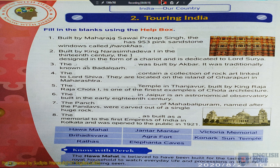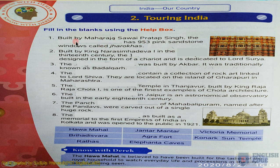It is the second chapter and the name is Touring India. The question is fill in the blanks using the help box. First question: built by Maharaja Sawai Pratap Singh, the blank has 953 pink sandstone windows called jharokhas. The answer is Hawa Mahal.